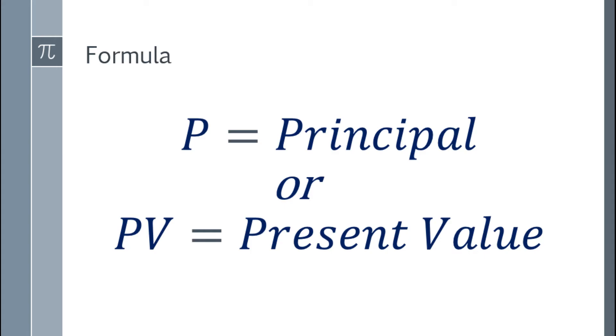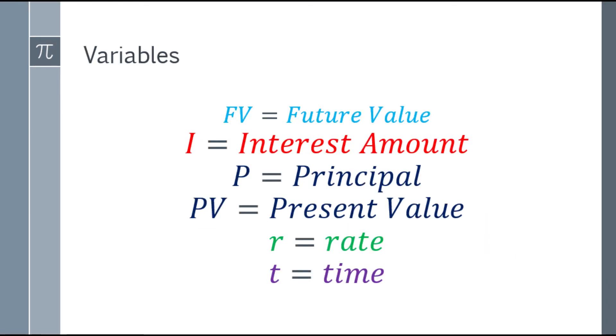They're just like what they mean in our formula. Just a refresher, these are our variables: FV means future value. In other textbooks, it will be A, letter A. And for I, that's interest amount, P for principal, PV for present value, R for rate, and T for time.